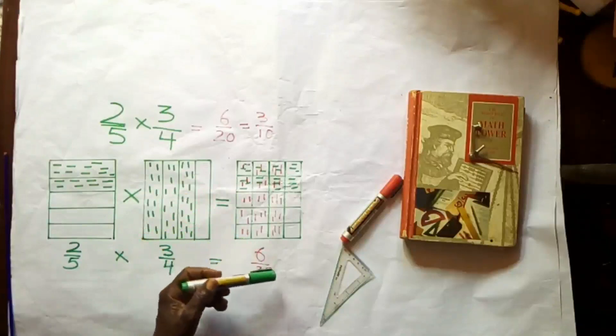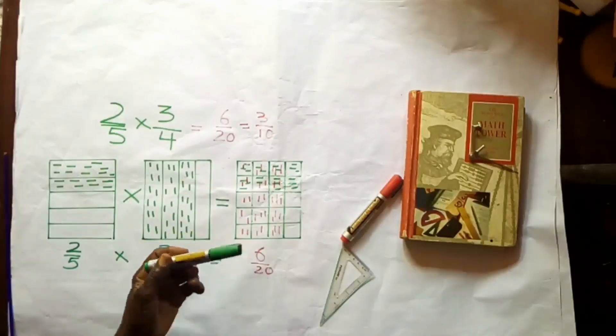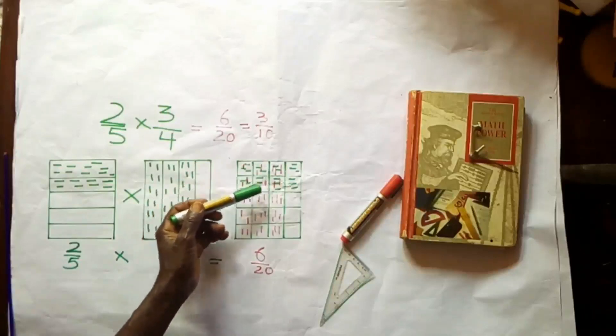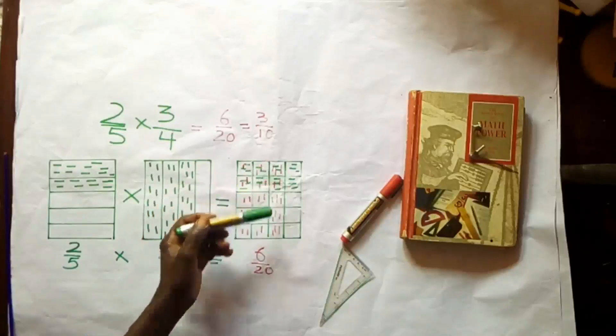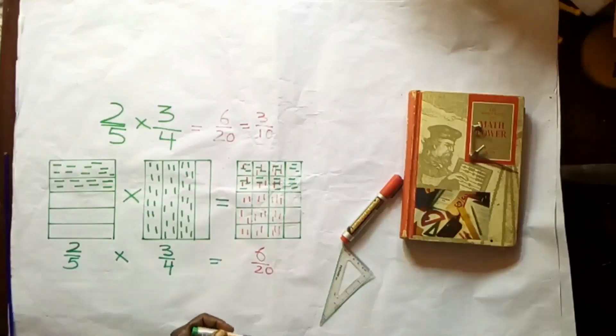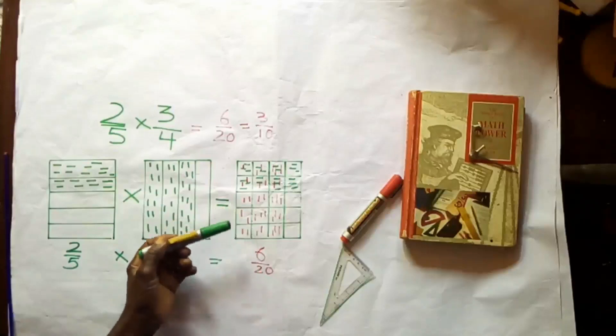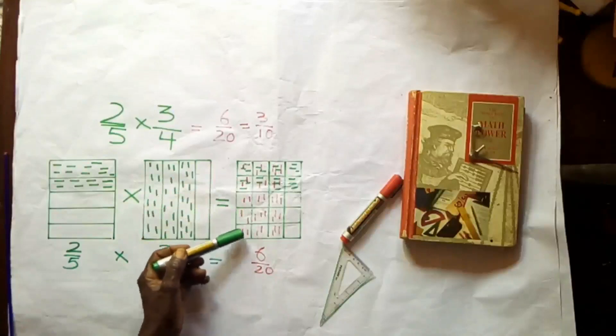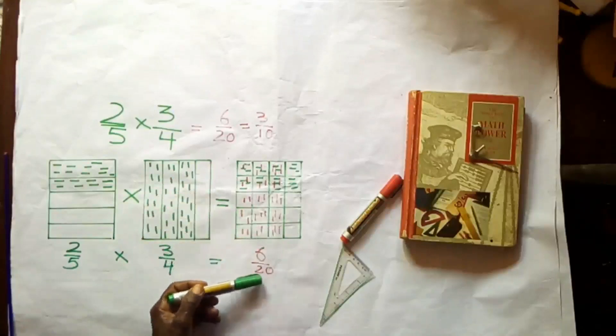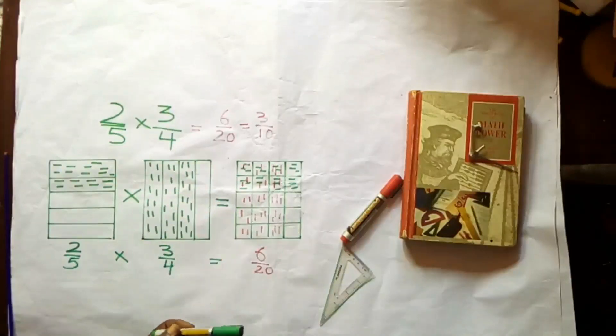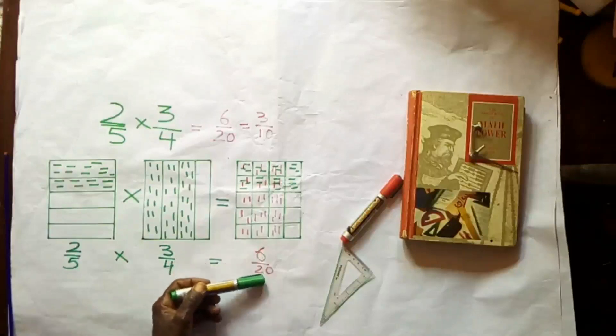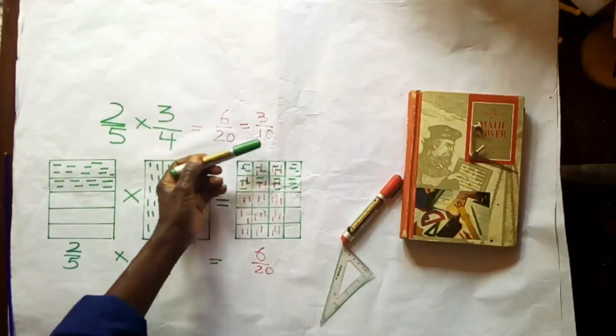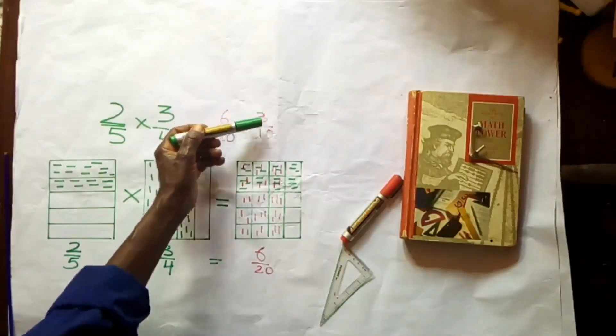So the common area we've got has, in terms of cells: 1, 2, 3, 4, 5, 6—six cells total. Number of cells: 1, 2, 3, 4, 5 by 1, 2, 3, 4—that's 20. So the product is 6/20, which we reduce to 3/10.